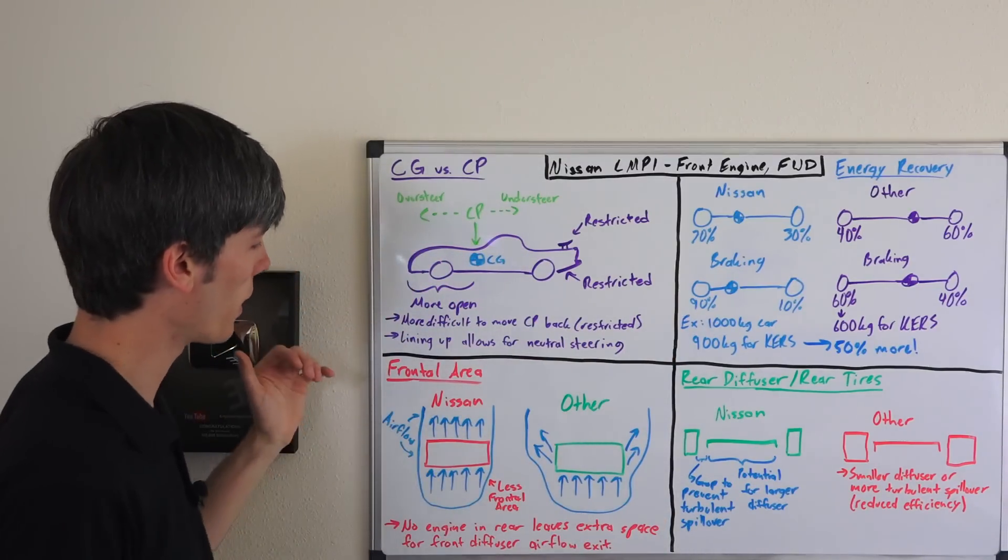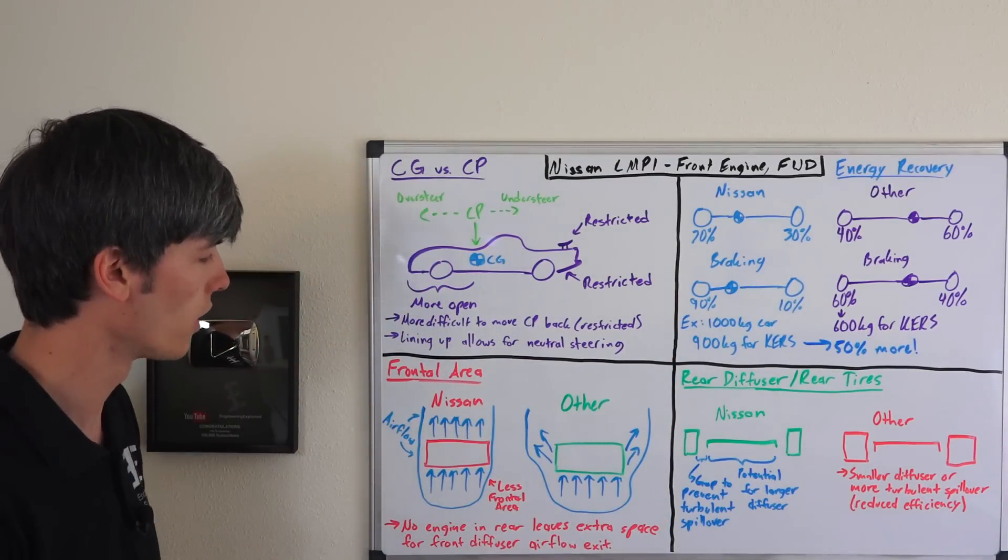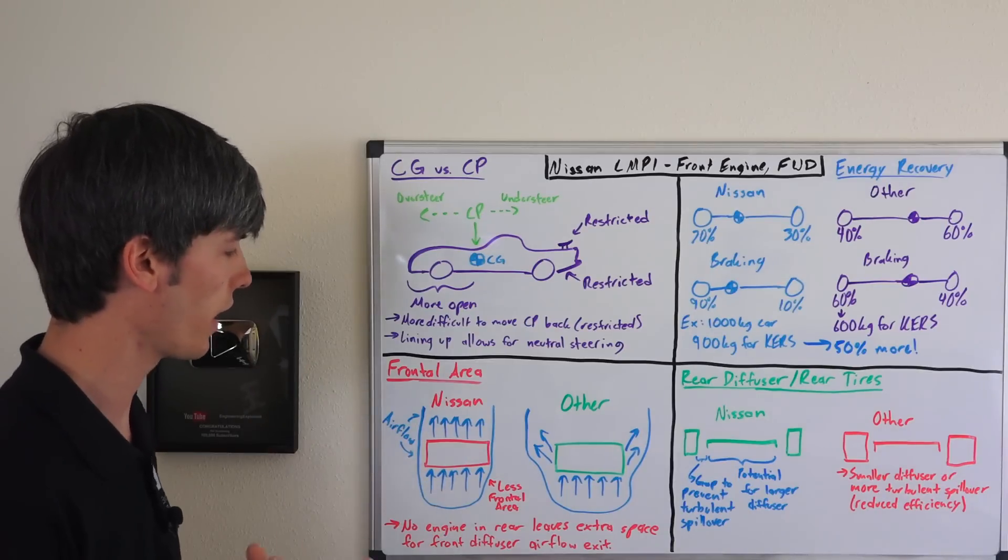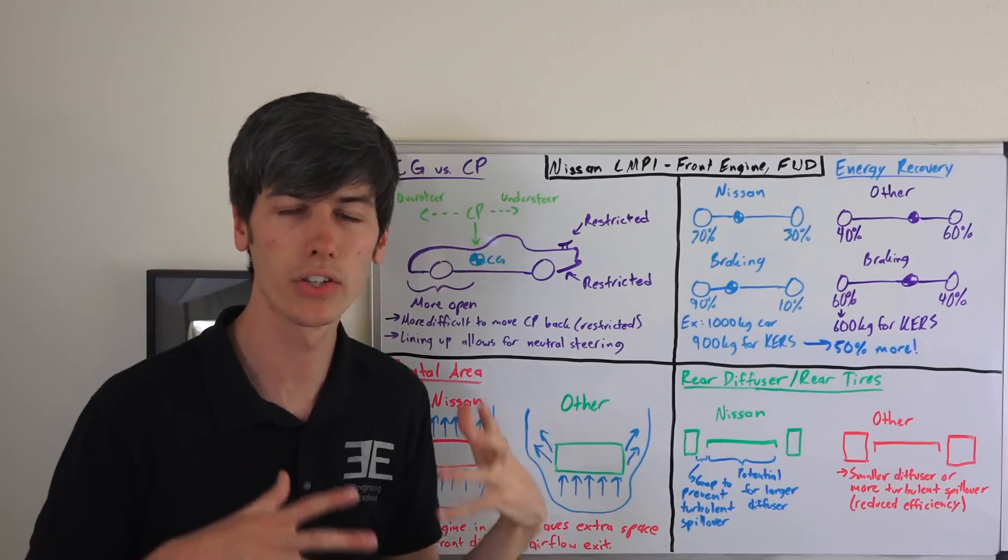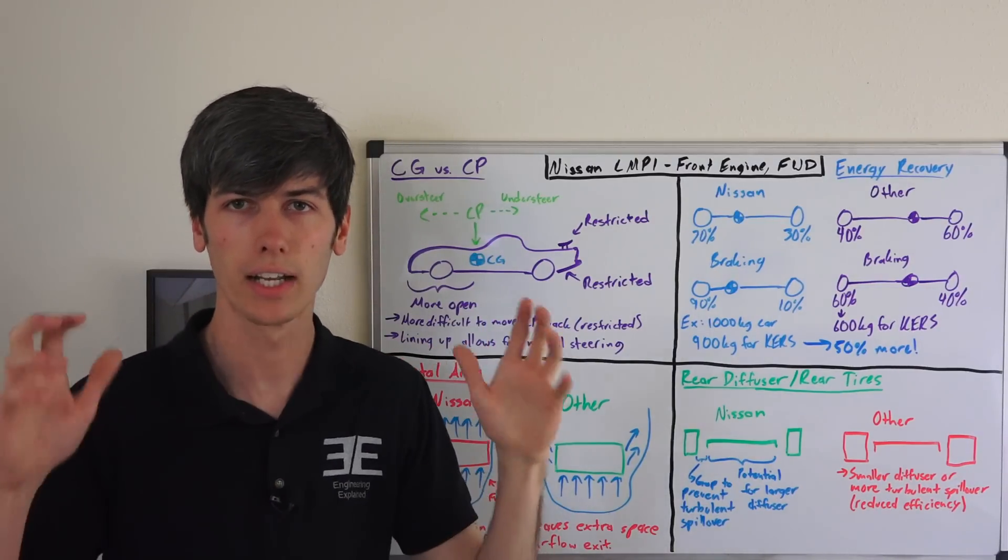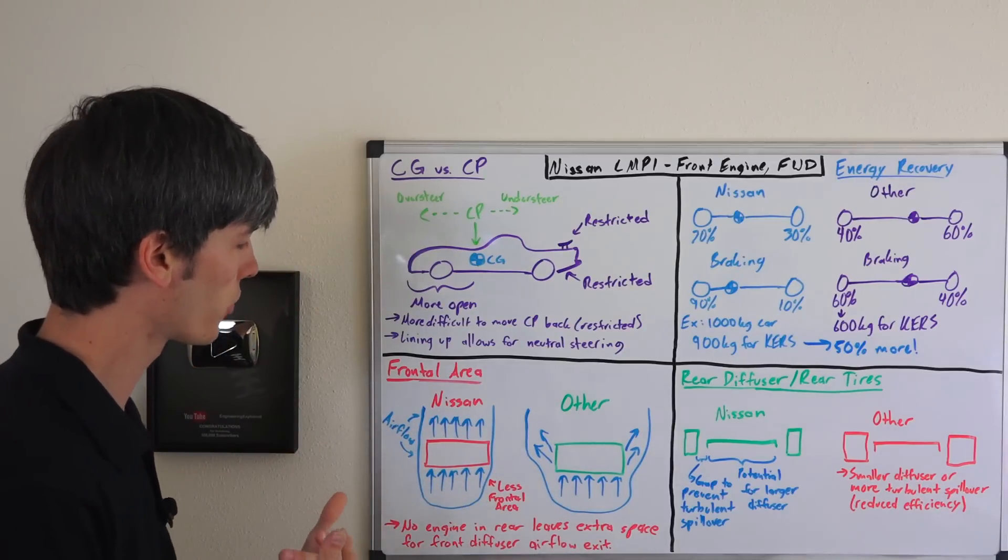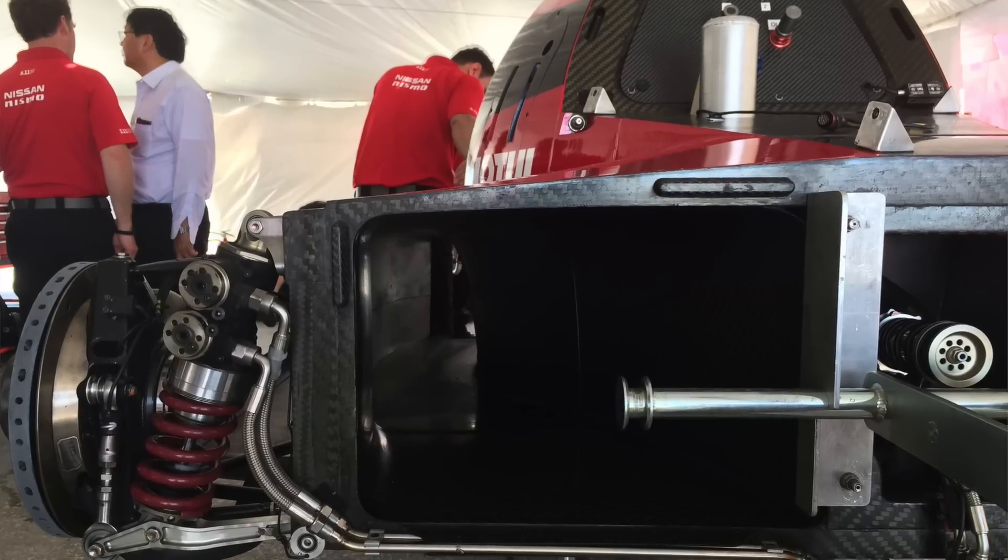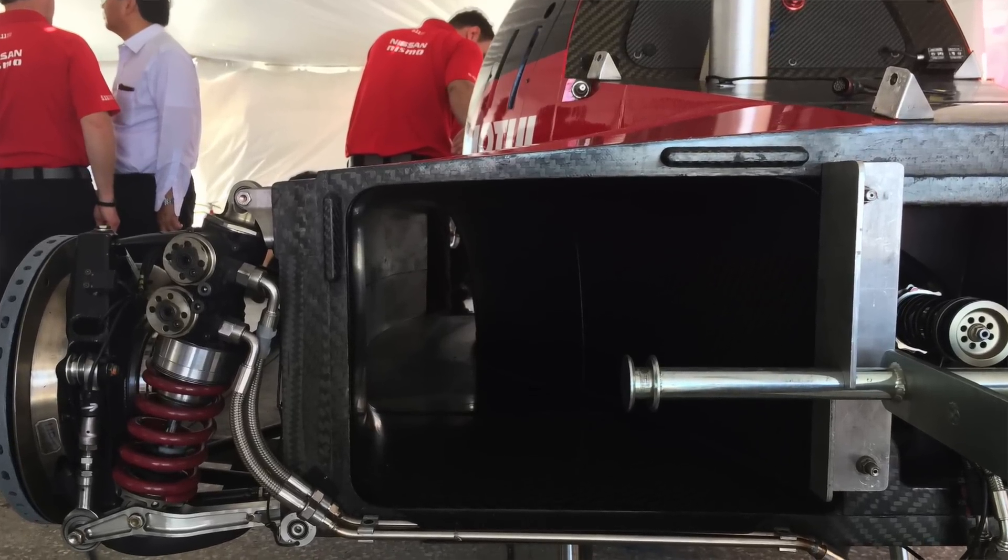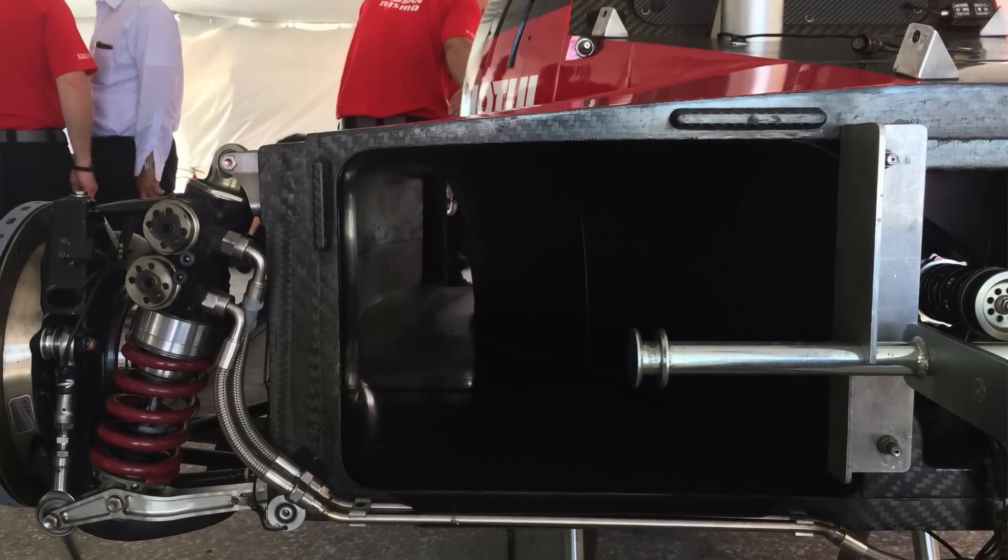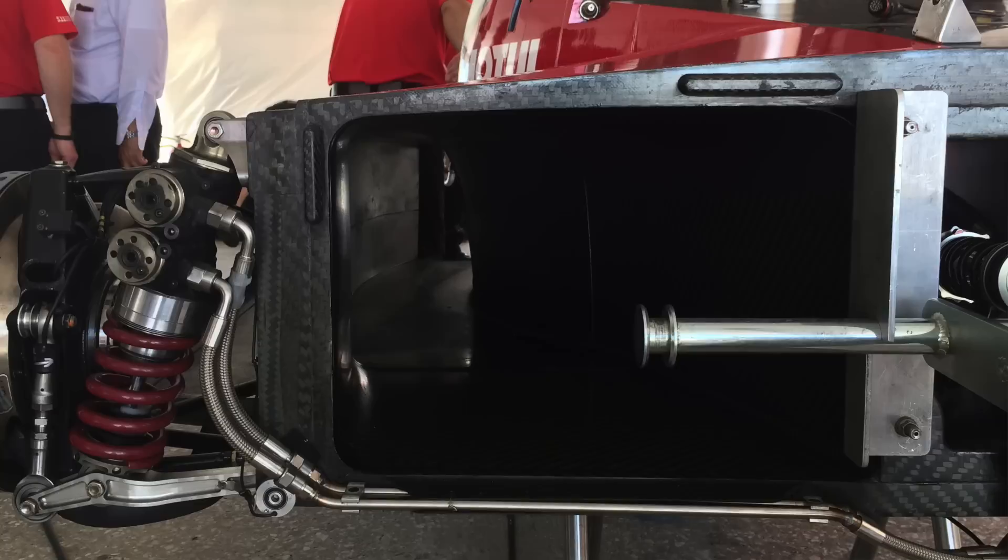Another thing to talk about is the frontal area of the vehicle, and this comes down to Nissan's engine placement. Because the engine is placed up front, and all the drivetrain and complexities are up front, the back of the vehicle is very open. And what this allows them to do is to have the diffuser exit through the rear of the vehicle, rather than out the sides of the vehicle, which is more traditionally done by some of the other teams.